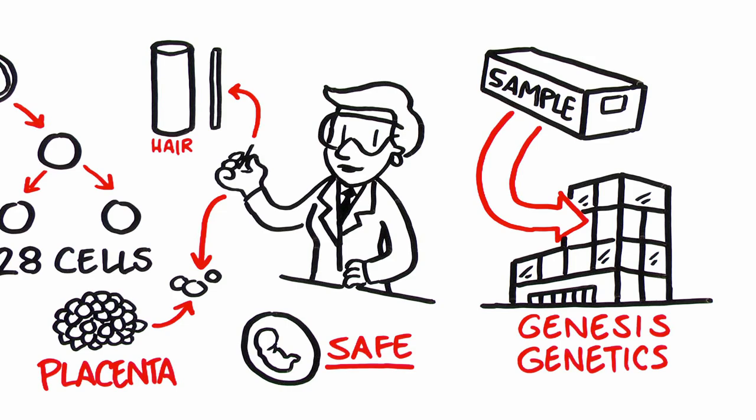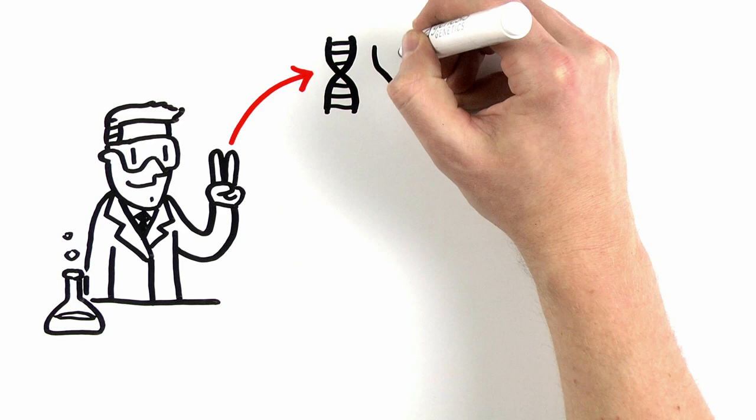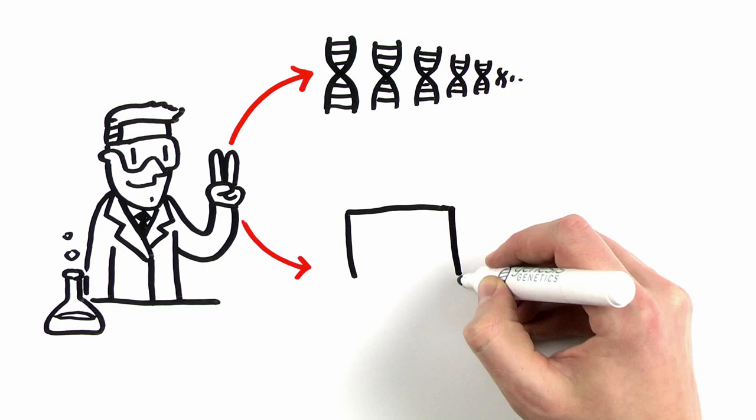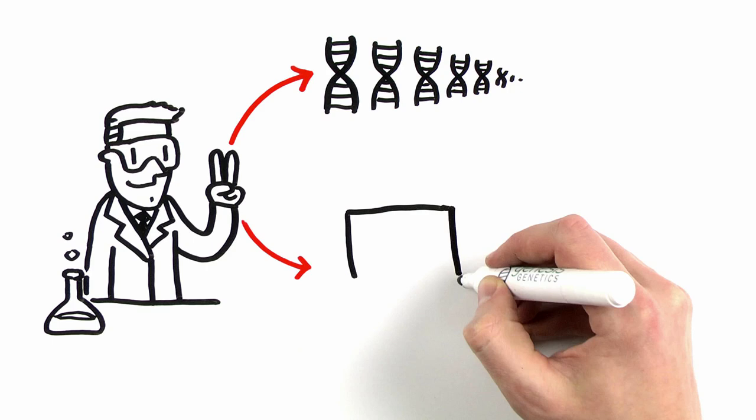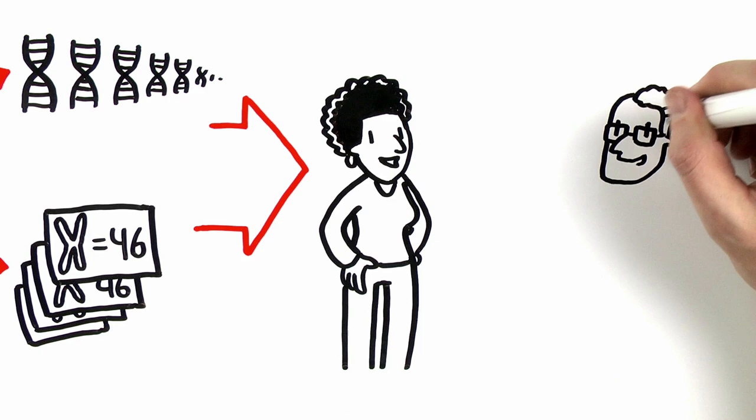In the lab, we do two things. First, we make millions of copies of the DNA in those cells so we have plenty to examine. Then we count the chromosomes in each sample removed from each of your developing embryos. This information is relayed to your clinic, where you and your doctor can make a more informed decision about treatment and can transfer a healthy embryo.